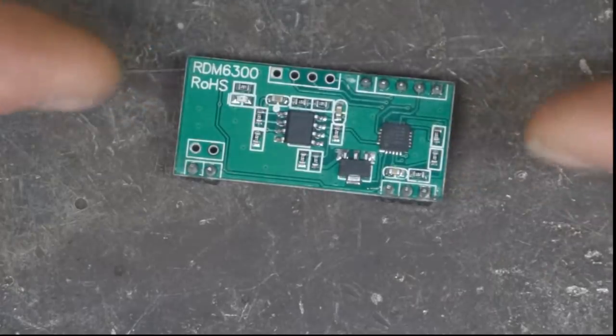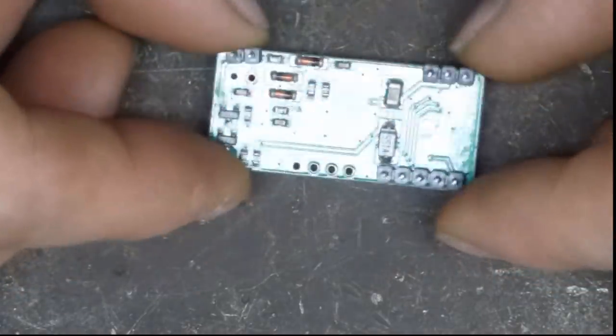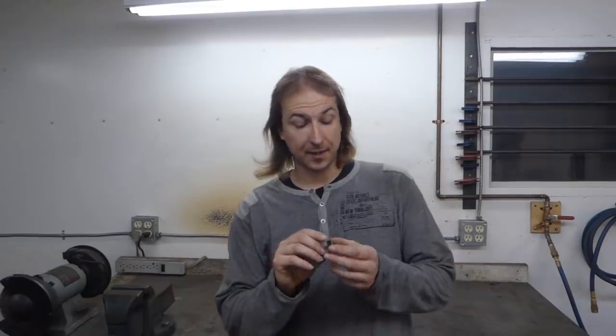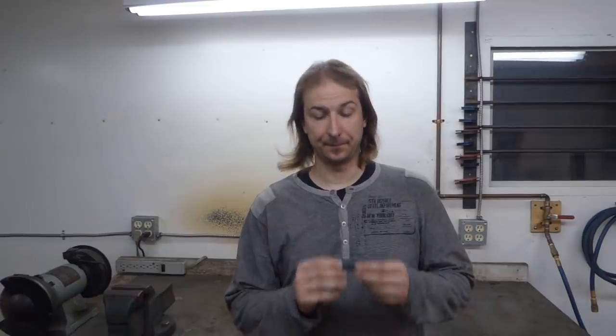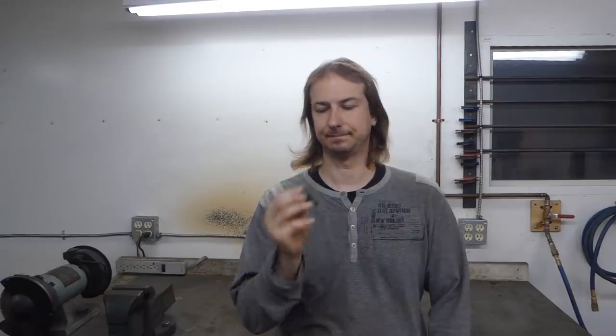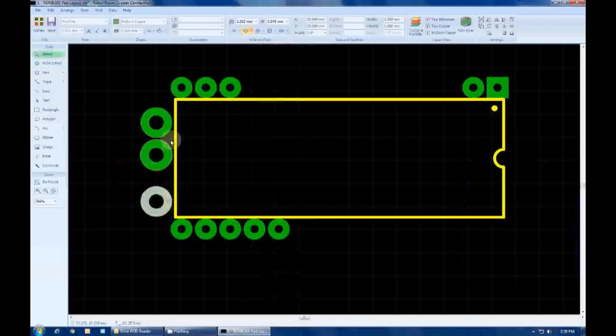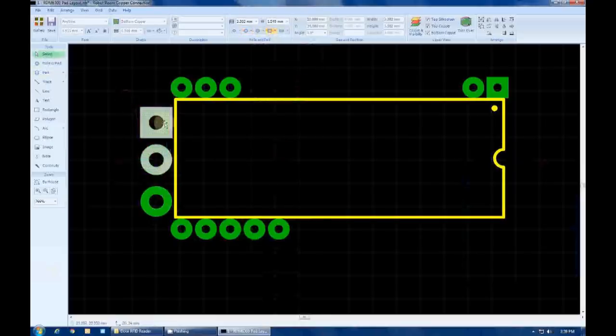As standalone modules in a controlled environment, these things are great. However, the car is not exactly a controlled environment, so I need to make a little board on which to mount this that drops the car's 12 volts down to 5 volts and provides a little bit of power protection.